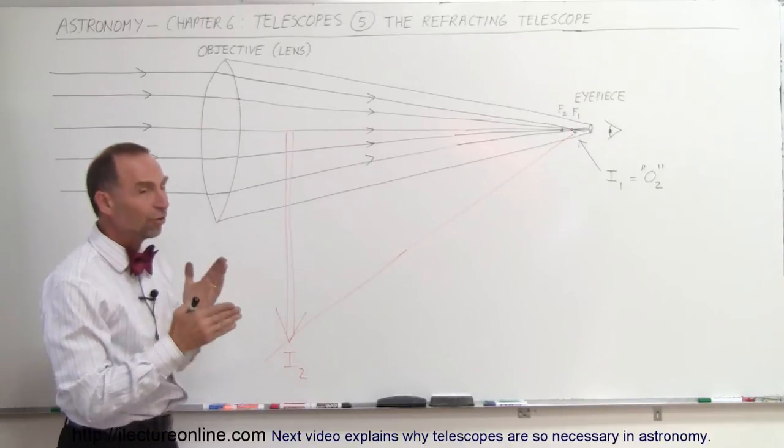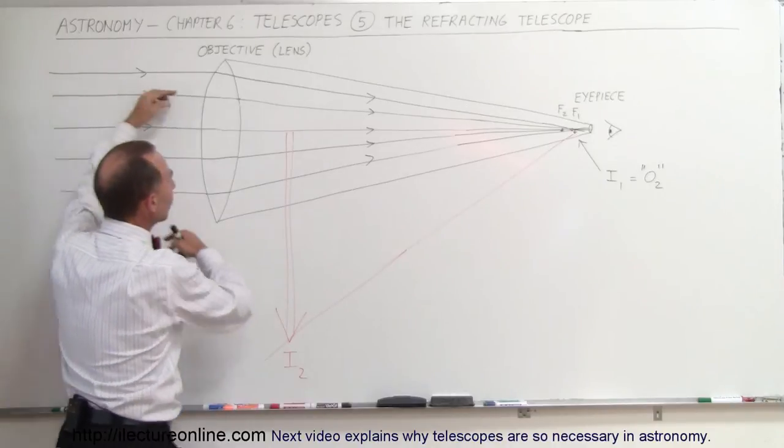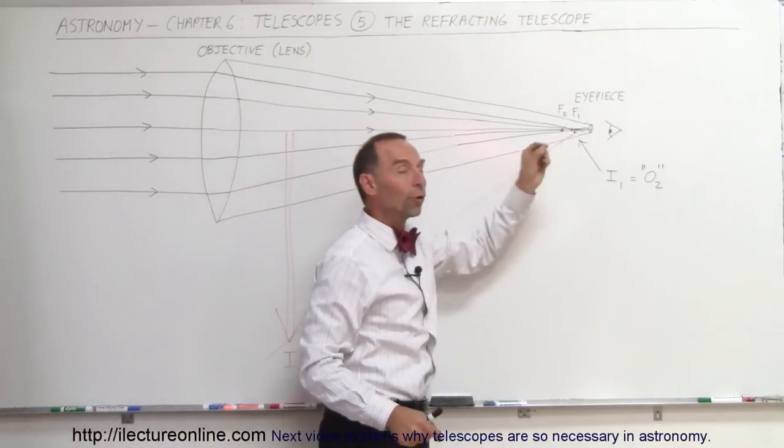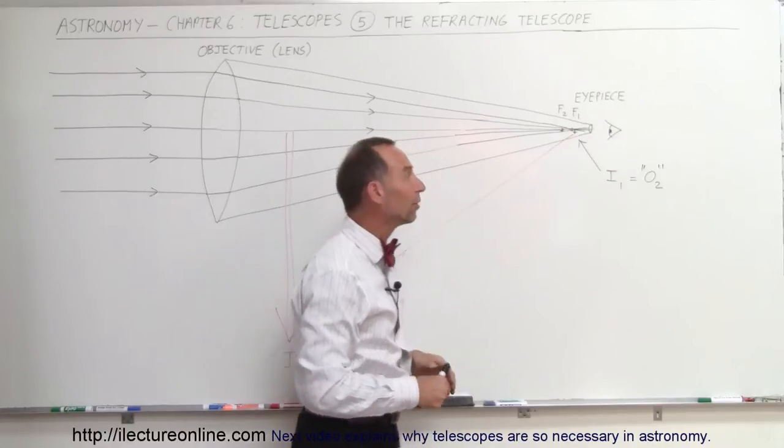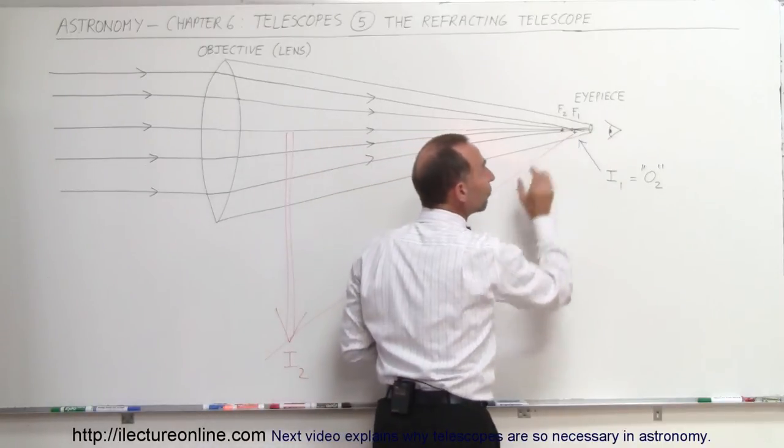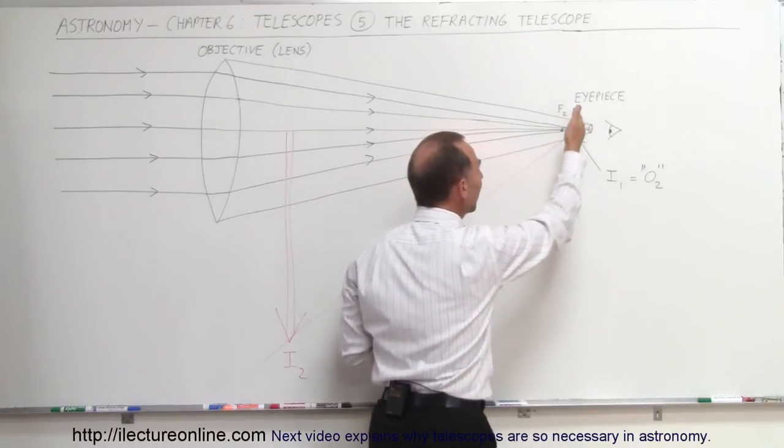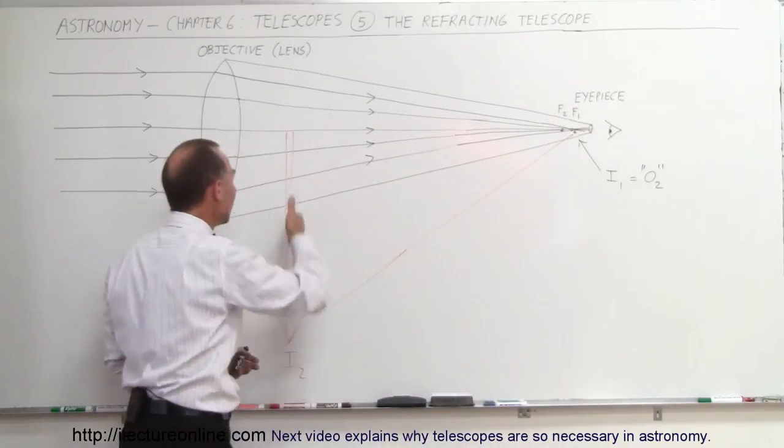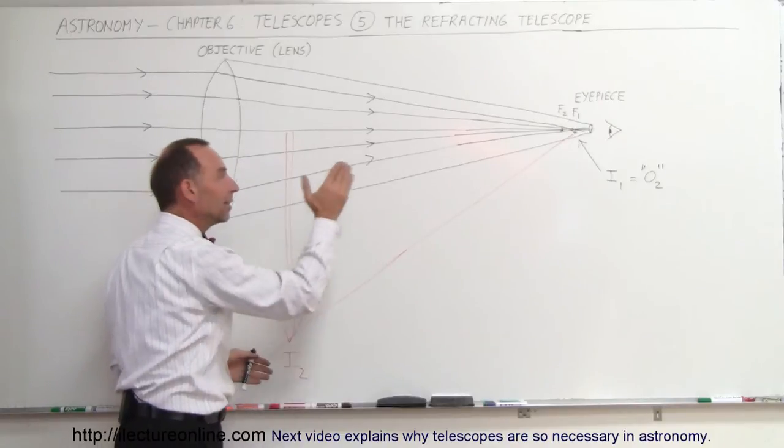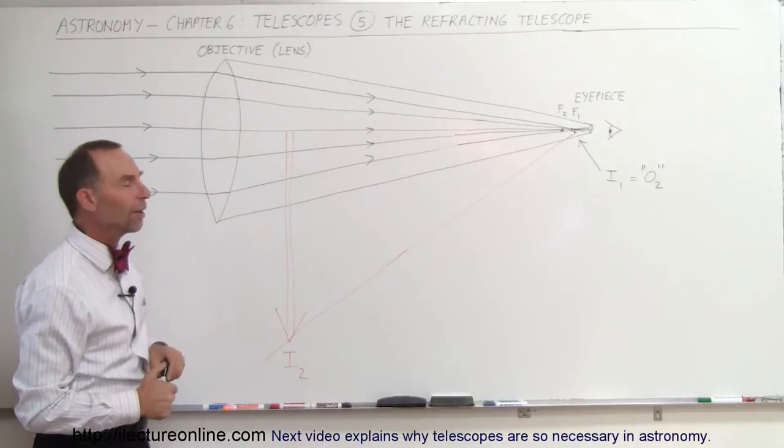But notice how it uses the principle of the two lenses. For far away objects, the image will form very close to the focal point, just past the focal point. For the second lens, since the object is inside the focal point, closer to the lens than the focal point of the second lens, a virtual image will be formed, making the final image that the astronomer or the observer will see. And it's very much enlarged, as you can see.